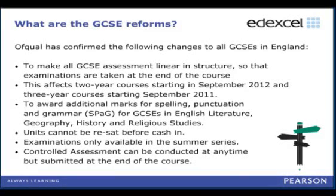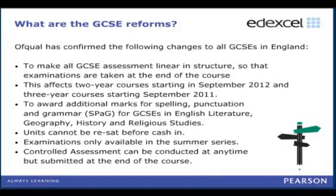Examinations will only be available in the summer series — for these particular GCSEs there's no change there, as there are no January sessions for these languages. Controlled assessments also don't apply to Russian, Japanese, Greek or Arabic. For those teaching other languages with controlled assessments, it's useful to know that controlled assessments can be conducted at any time, but going forwards they will have to be submitted for marking or moderation at the end of the course, with no interim moderation or marking opportunities.